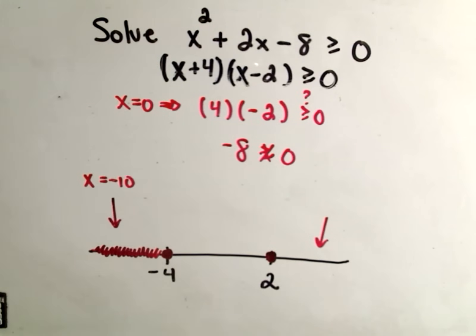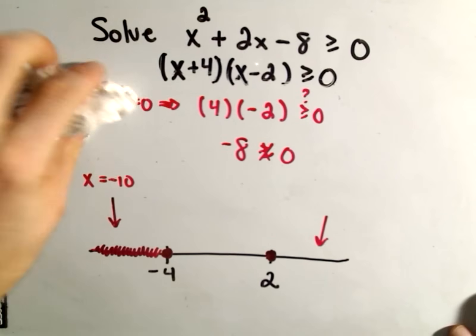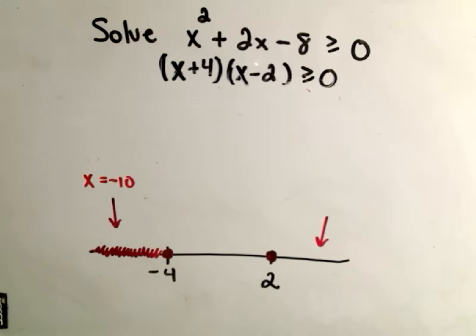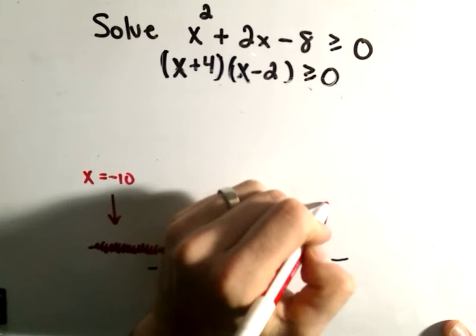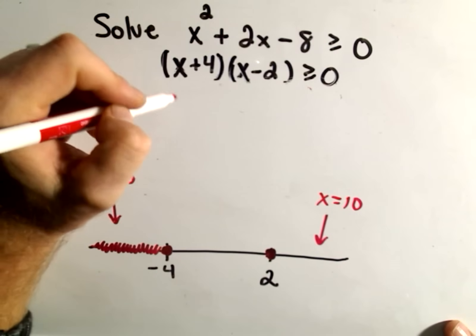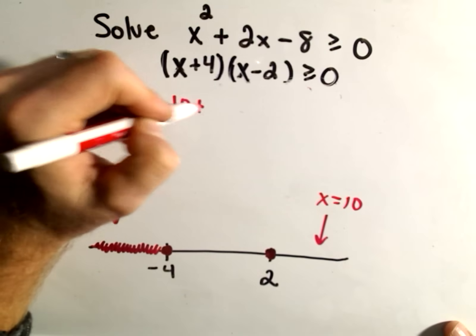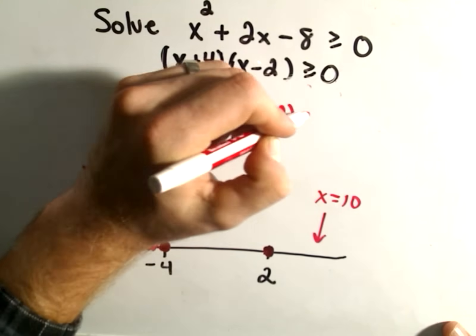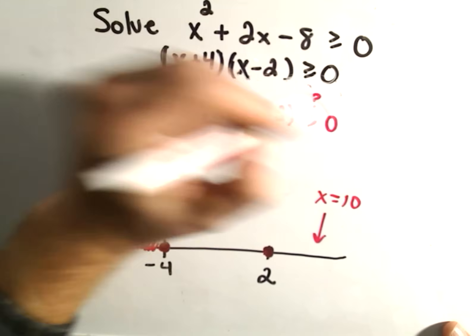And lastly, let's take a number bigger than 2 and see if it works. I don't know. Maybe we can simply plug in x equals positive 10. So if I plug in positive 10, I'm going to get 10 plus 4. 10 minus 2 is that greater than or equal to 0.